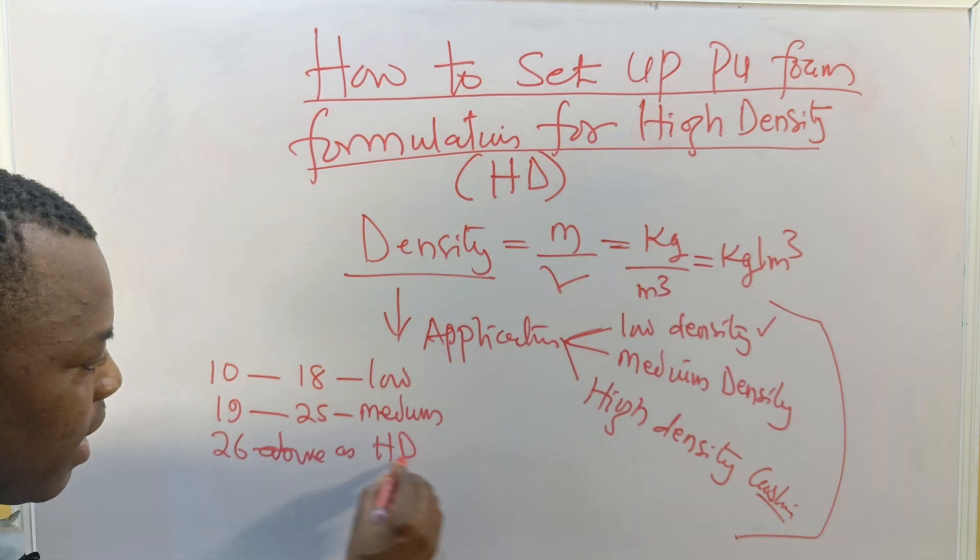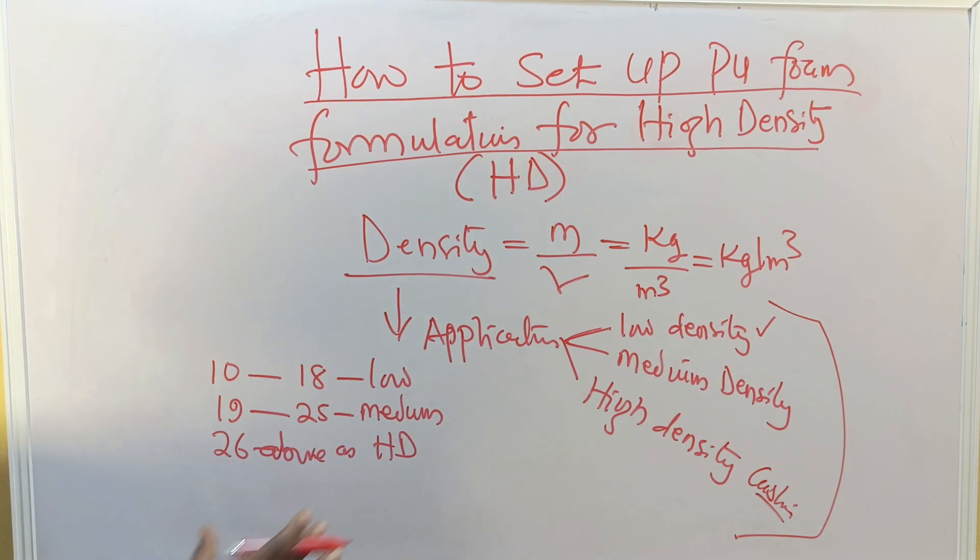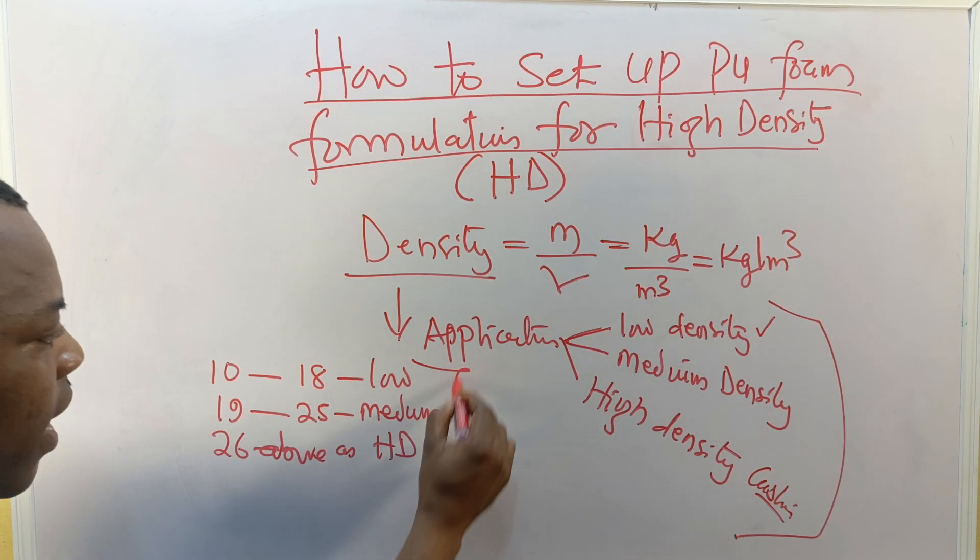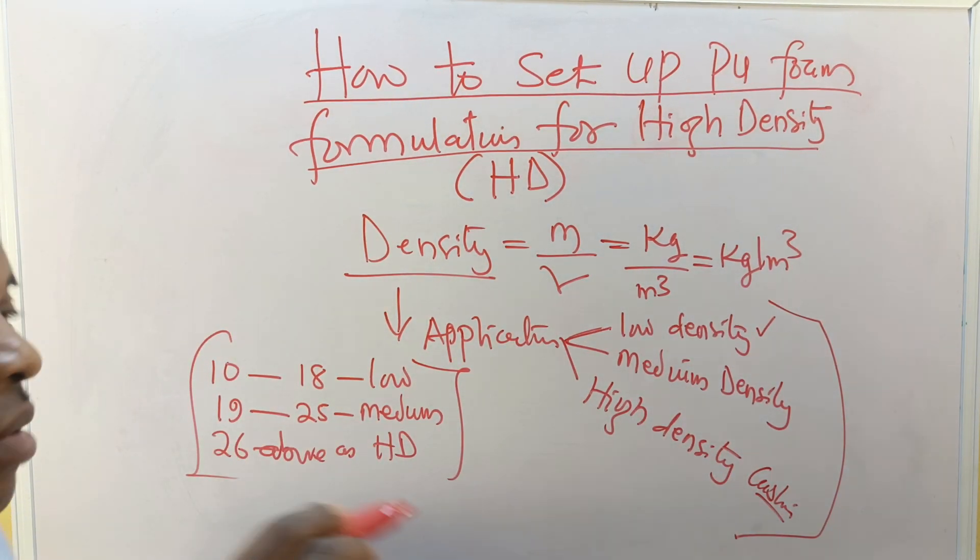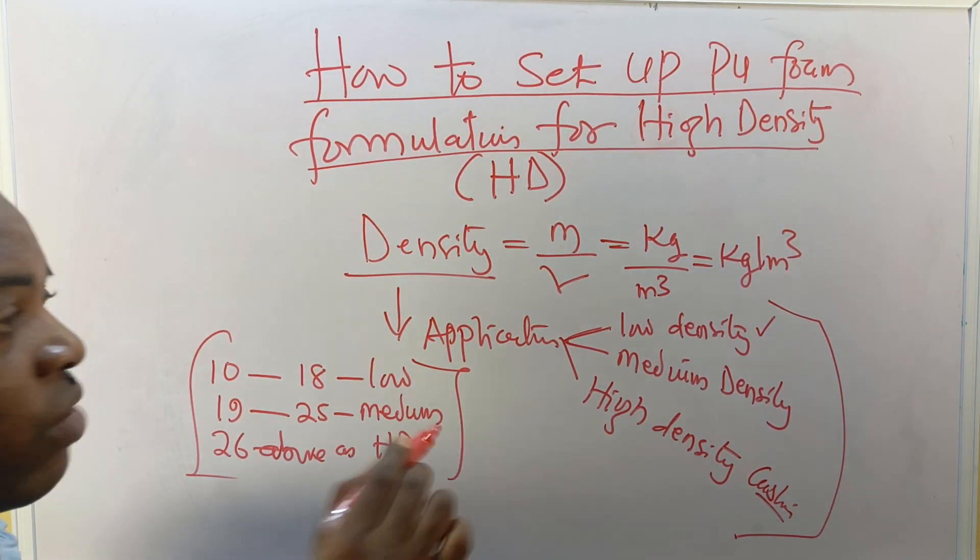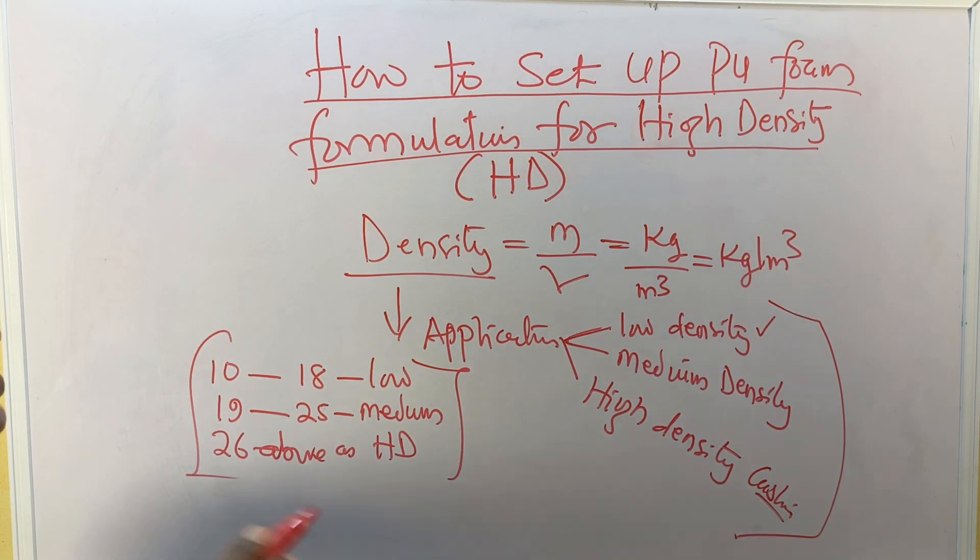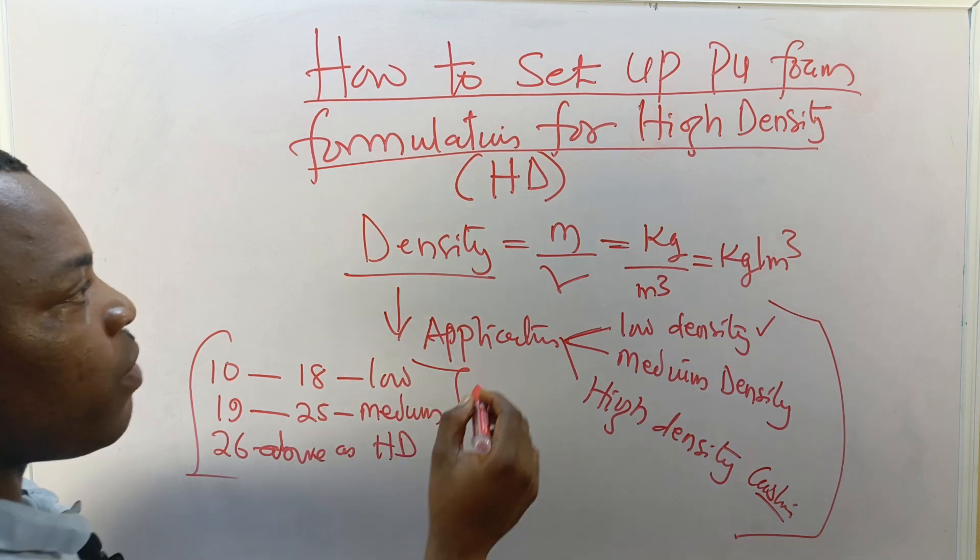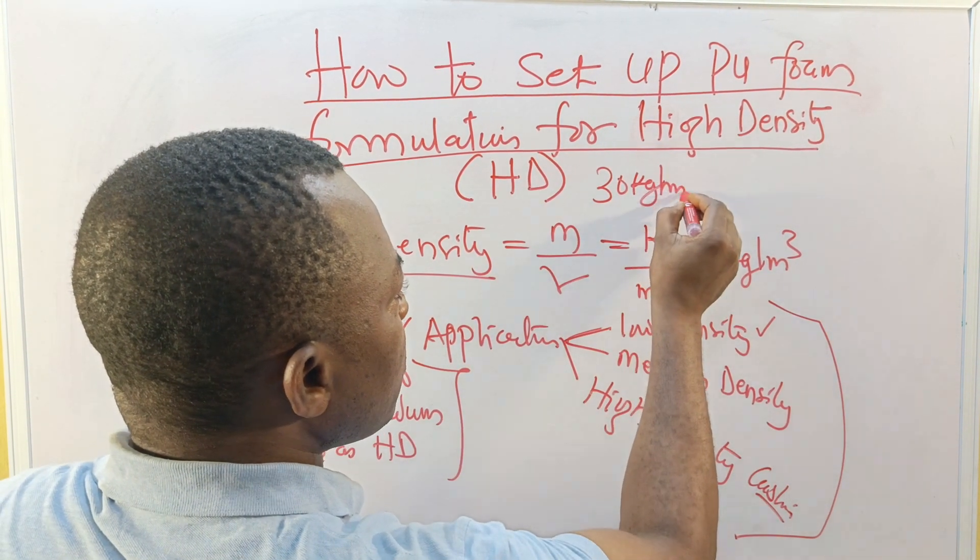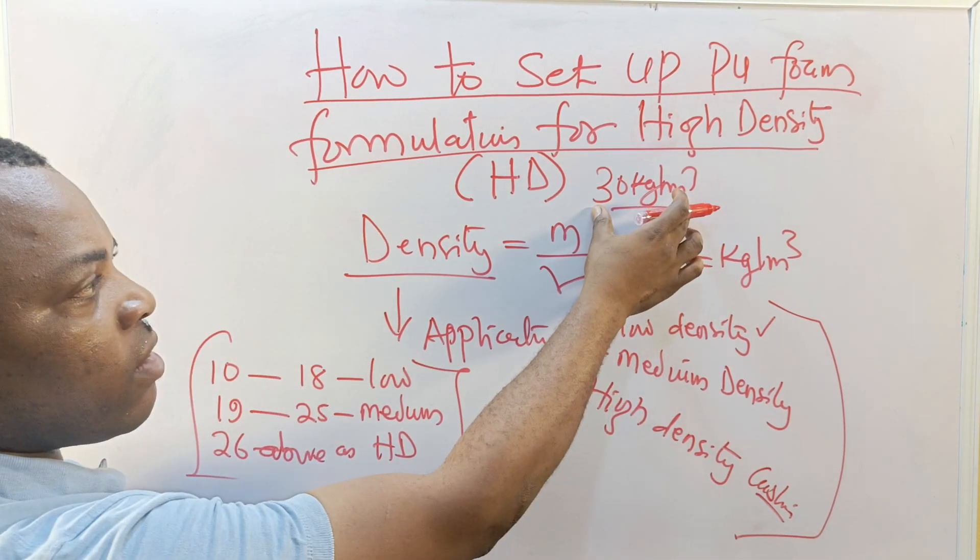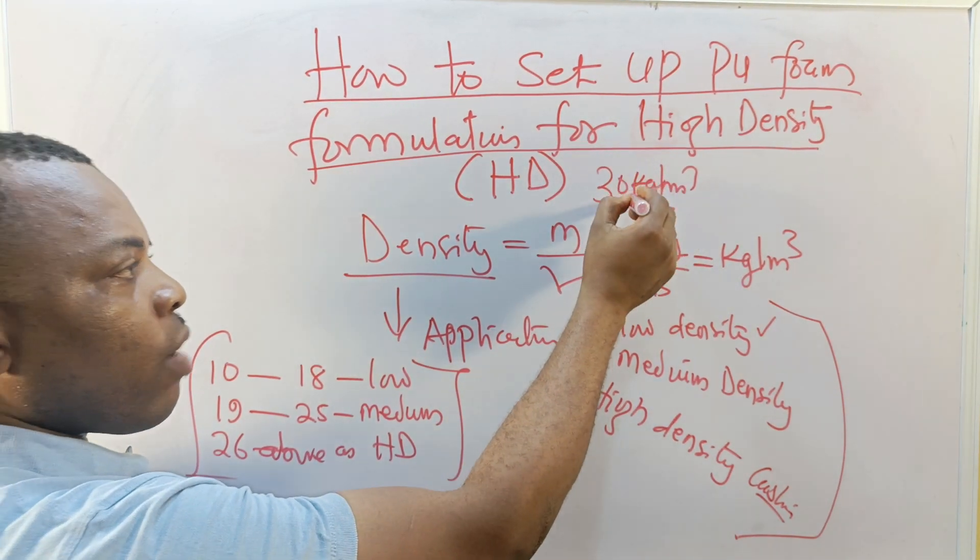All these depend on the economy of that particular country because country economy is not the same. For example, Nigeria may call 30 kg meter cube as low density, but another country may call this as high density.